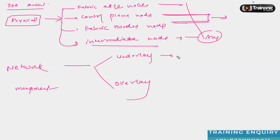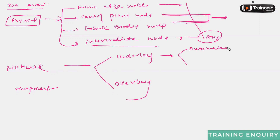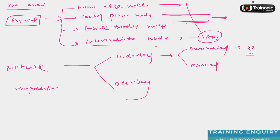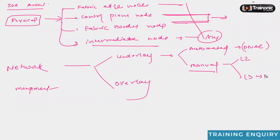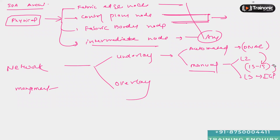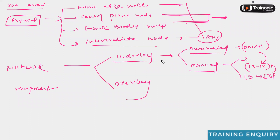In the underlay we again have two things: either we can have an automated underlay or we can have a manual underlay. The automated underlay is provided by the DNAC. The manual underlay can be either Layer 2 or Layer 3. If you are using Layer 3 as the manual underlay, we have to use any IGP protocol — Cisco recommends that you use ISIS. In fact, ISIS is what you will see in the automated underlay as well. The underlay is the underlying infrastructure on top of which different overlay tunnels are built.